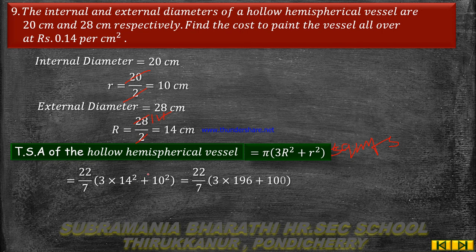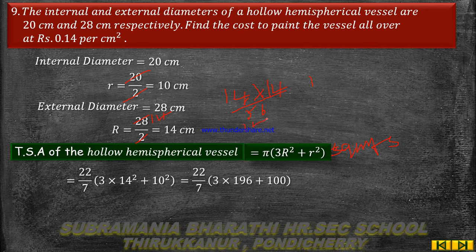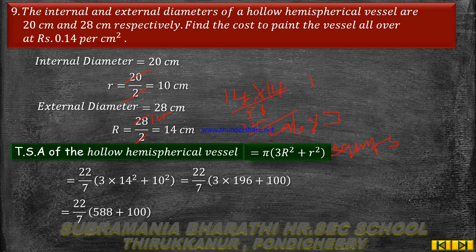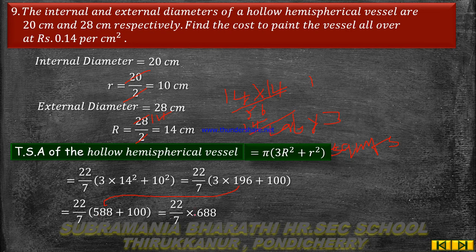Calculating: 14 squared is 196. So 3 into 196 gives 588. And 10 squared is 100. So we have 22/7 into (588 + 100), which is 22/7 into 688.